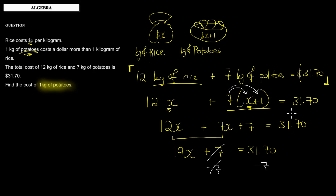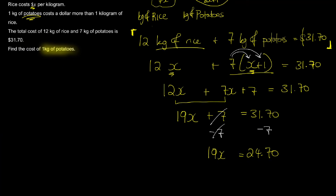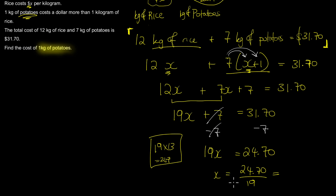$31.70 minus $7 is $24.70. So 19x equals $24.70. To get x by itself we divide both sides by 19. x equals $24.70 divided by 19. Since 19 times 13 is 247, we get 24.7 divided by 19 equals 1.3, which in money is $1.30. That's the value of x.